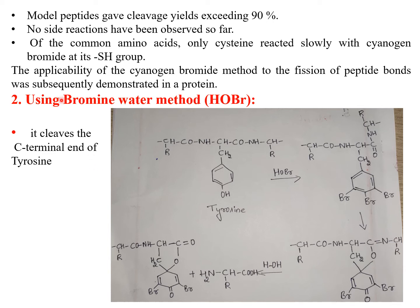Another method is the bromine water method using HOBr, which separates amino acids by cleaving at tyrosine residues. By adding bromine water to tyrosine-containing peptides, it undergoes a bromination reaction where bromine atoms attack the benzene ring of tyrosine, forming a brominated structure. Upon hydrolysis, the amino acids are obtained separately from the peptide.